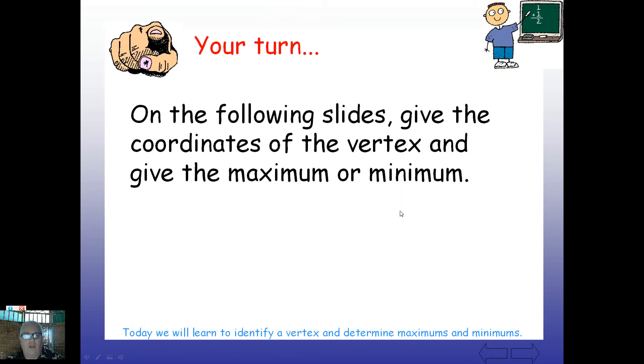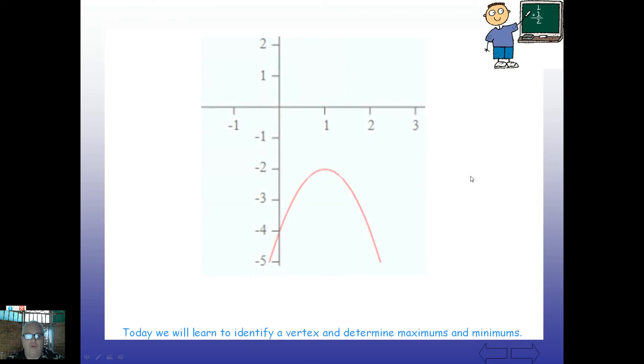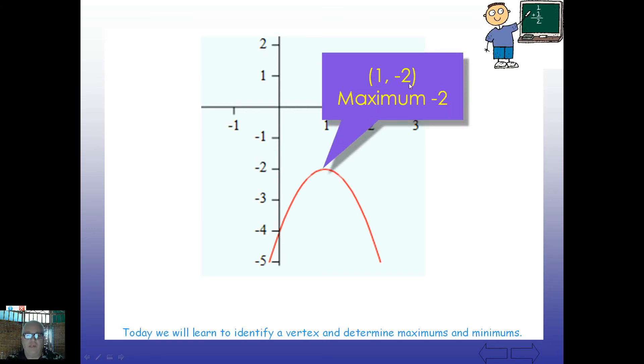So your turn now. On the following slides, give the coordinates of the vertex and then maximum or the minimum. And I'll walk you through the first one here. So if we were to look at this shape here, if we were to look for the high point, what do you think the vertex would be? The vertex is somewhere about here, so here's your origin, over one, down negative two. So how about a vertex of one, negative two? And what's the maximum point of this? It reaches a height of negative two. It doesn't go any higher than negative two, then it goes back down again. So we have the vertex of one, negative two, that's the actual literal point where it's at its highest, and it has a maximum height of negative two.